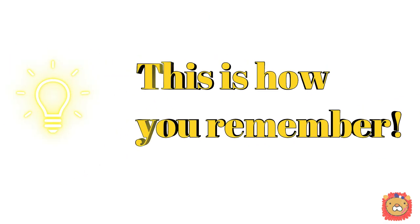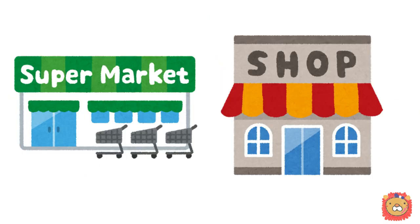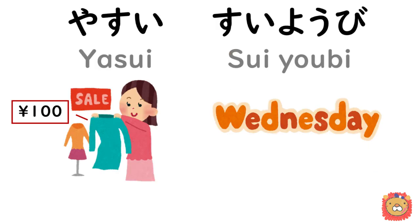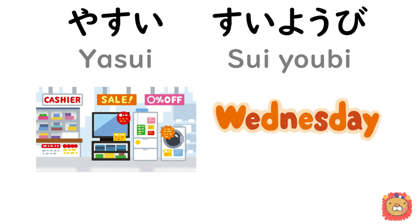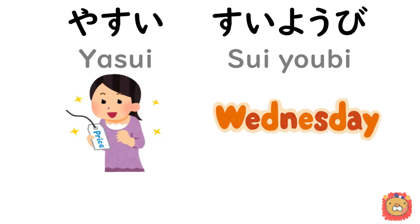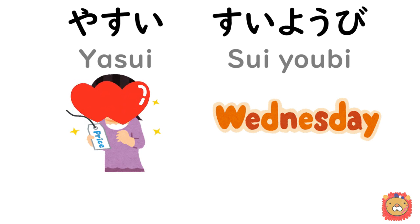And this is how you remember. Please imagine a supermarket or a shop that you go to often, and you find something on sale on Wednesday. 安い水曜日 — let's make it more emotional. 安い水曜日!